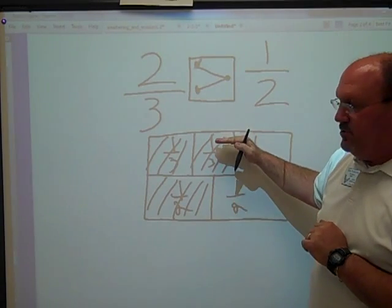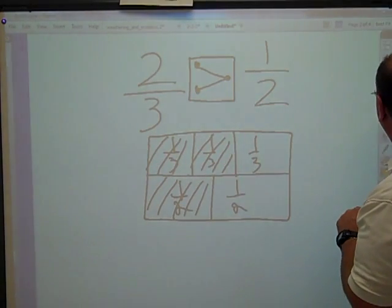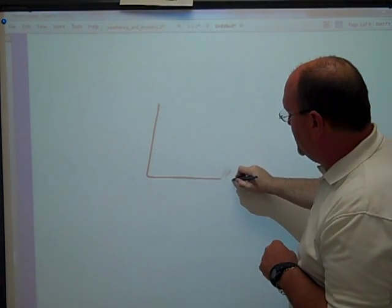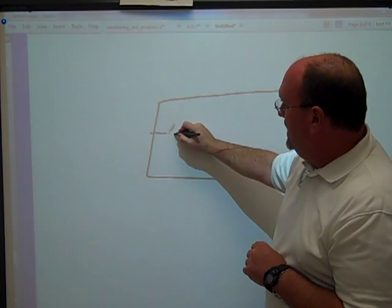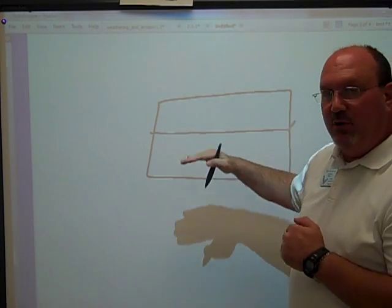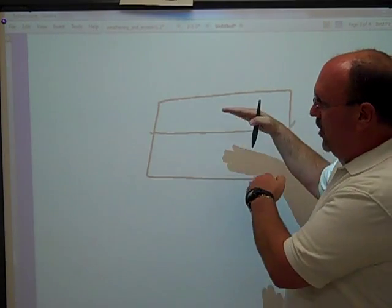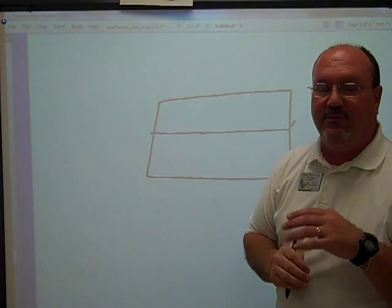Now the kids have to get used to drawing this fraction rectangle, so they've got to practice a nice straight fraction rectangle, cut it in half. They put one fraction upstairs, the other fraction downstairs, and then all they have to do is see it with their eyes, and that's what we tell them.